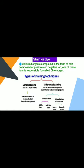A stain or dye is a colored organic compound in the form of a salt, composed of positive and negative ions, and one of these ions is responsible for the color — it is called the chromogen. There are many types of staining techniques: simple staining, which uses a single stain, and differential staining, which uses two contrasting stains separated by a decolorizer.